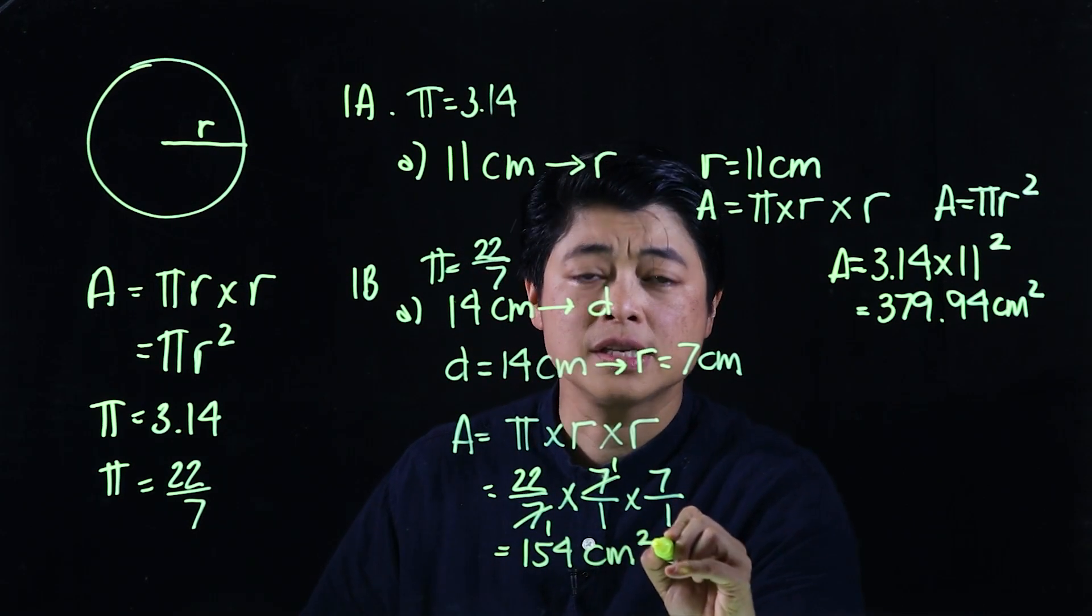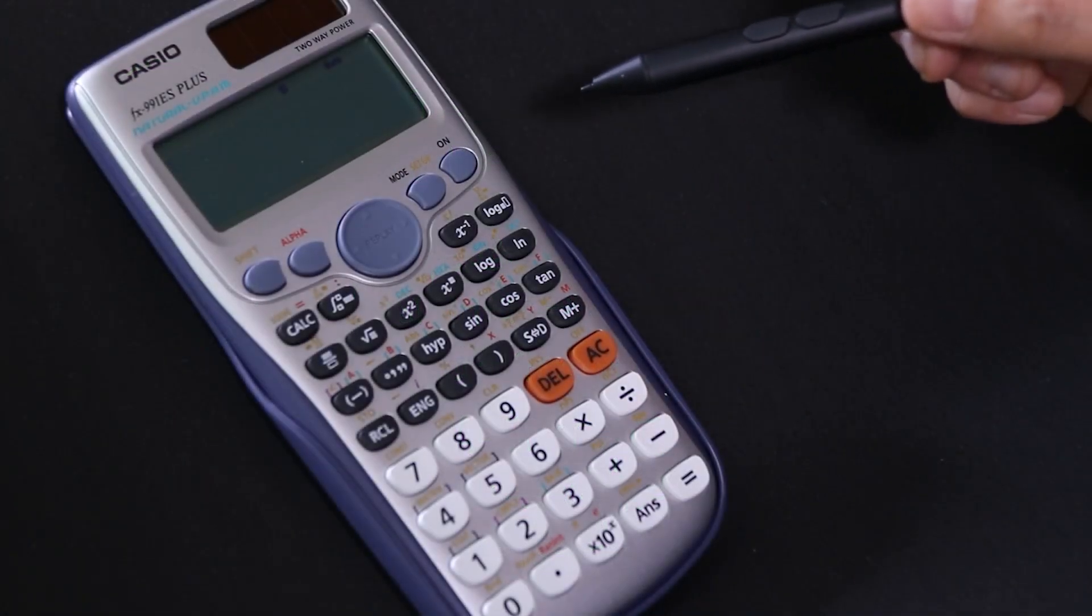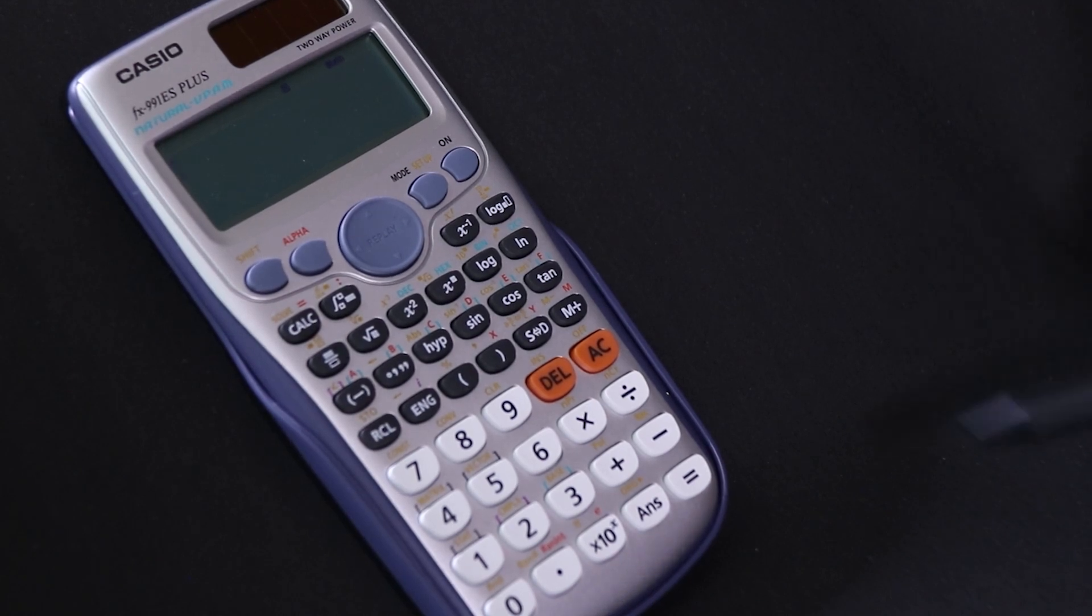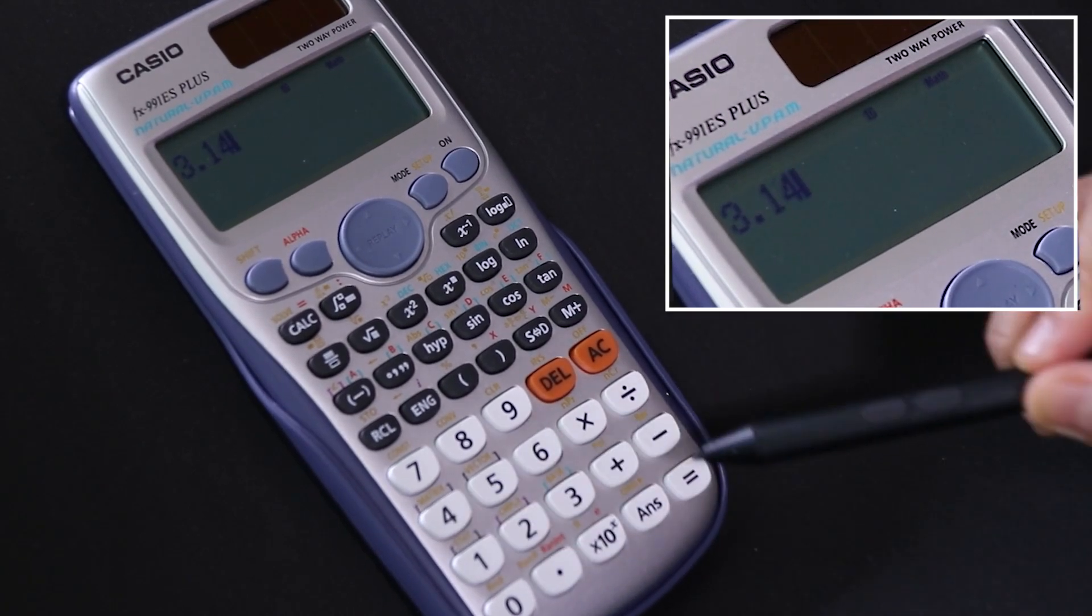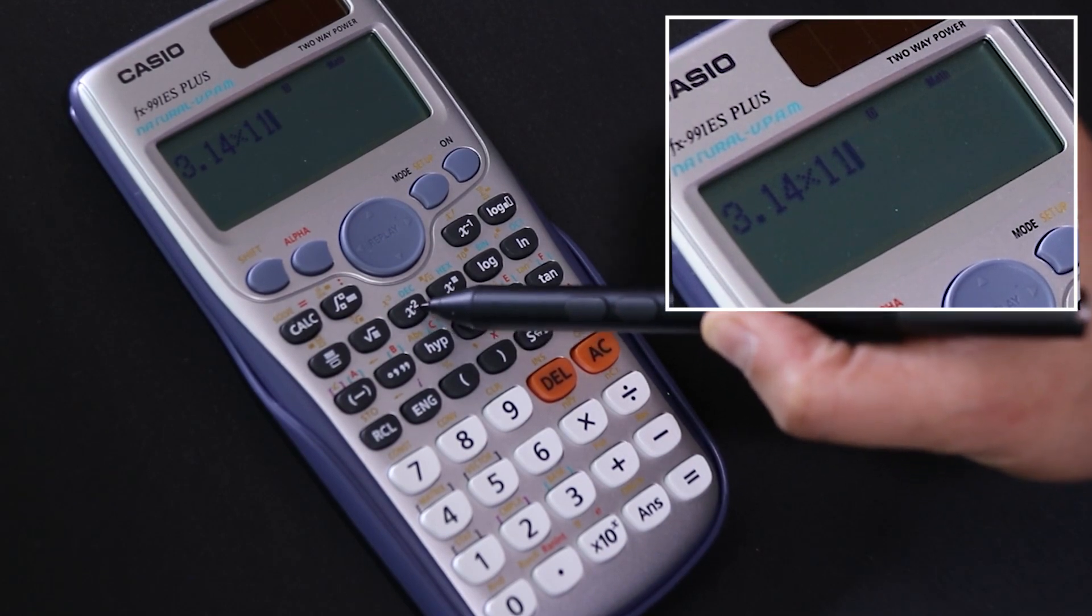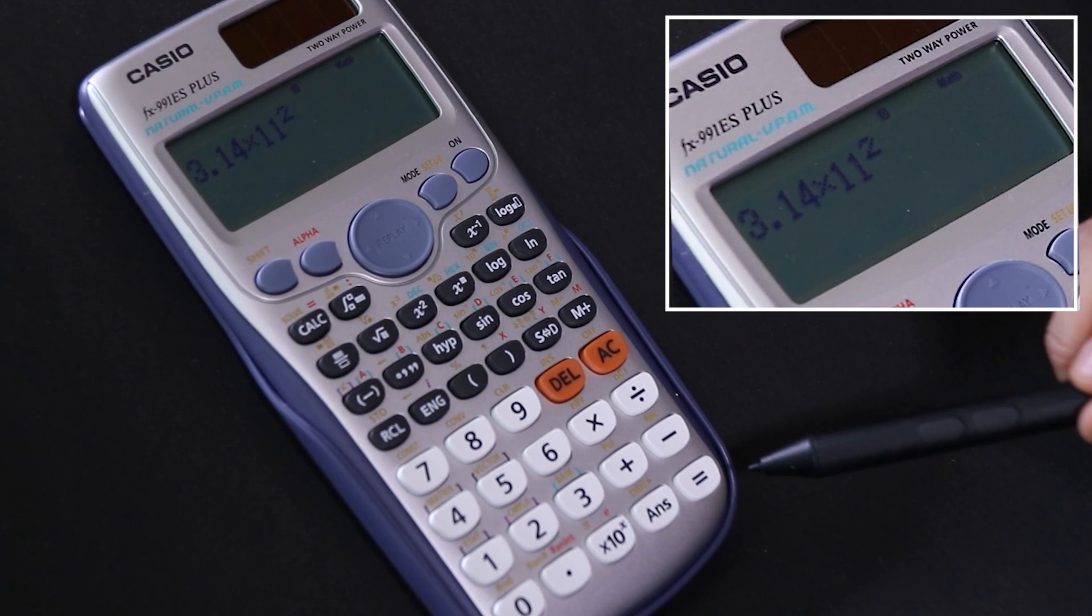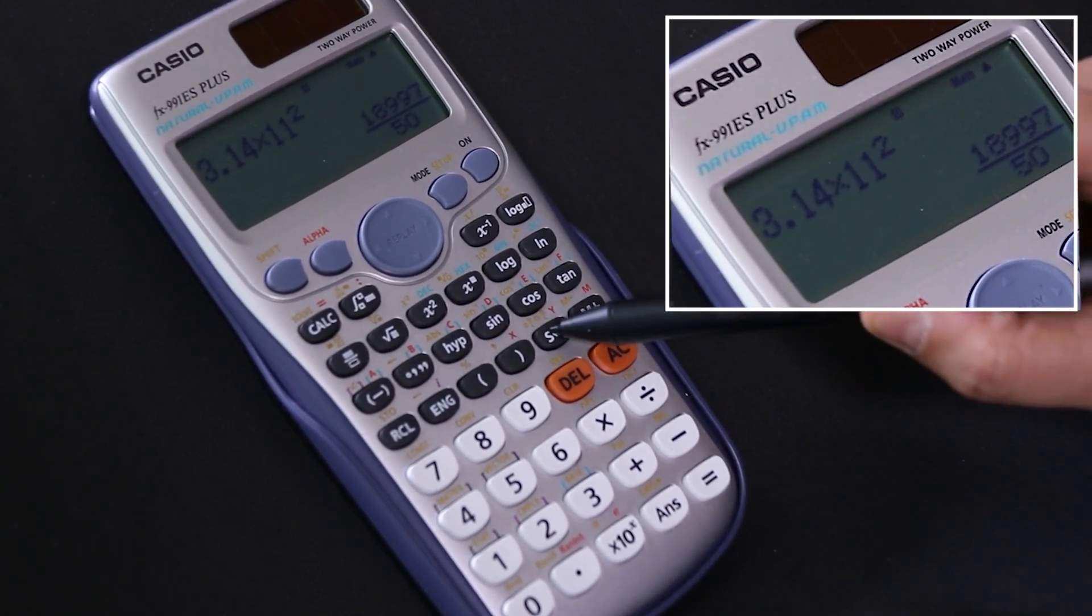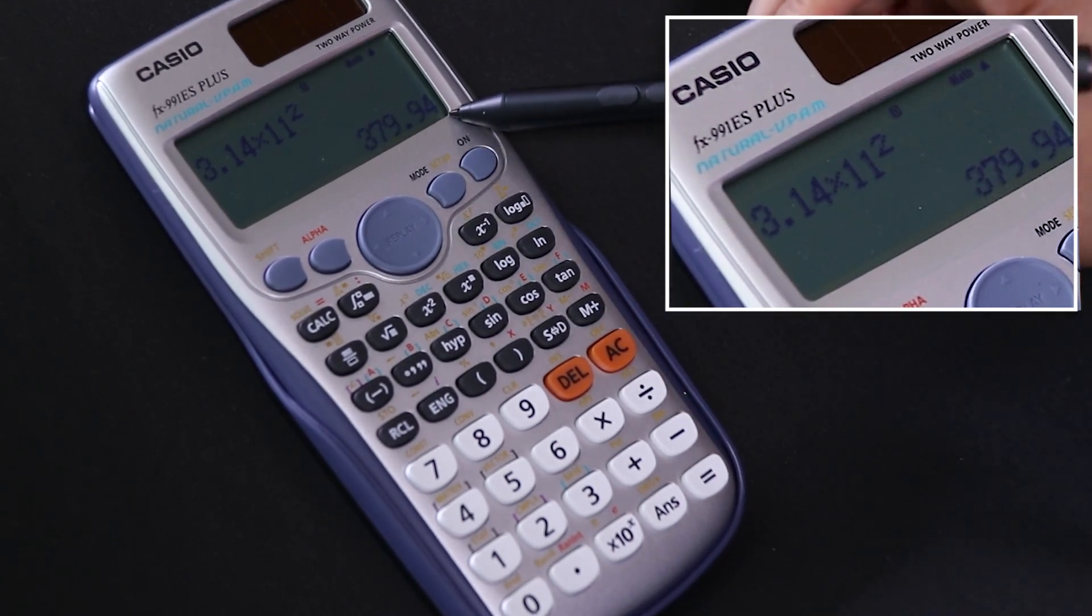As mentioned earlier I will show how to use the calculator for the square part. So we have 3.14 times 11 and then there's the squared button, so we press that squared and then when we press equal we should get 379.94. It's a fraction so we press the SD button which is 379.94.